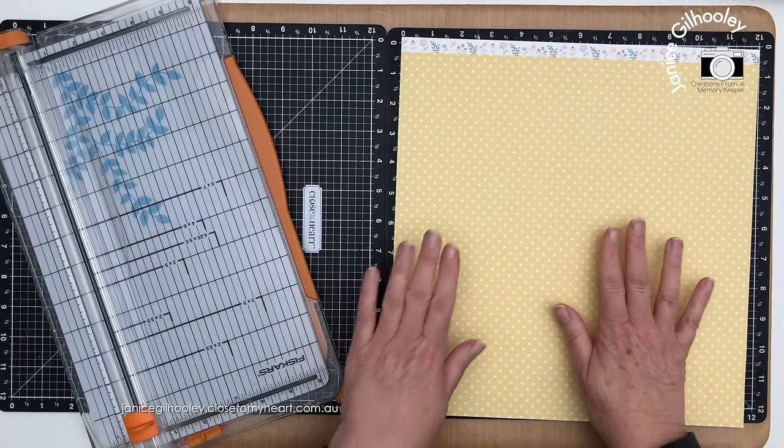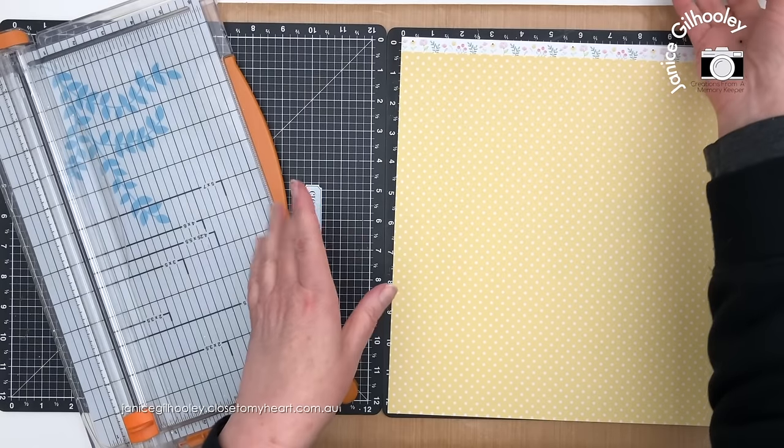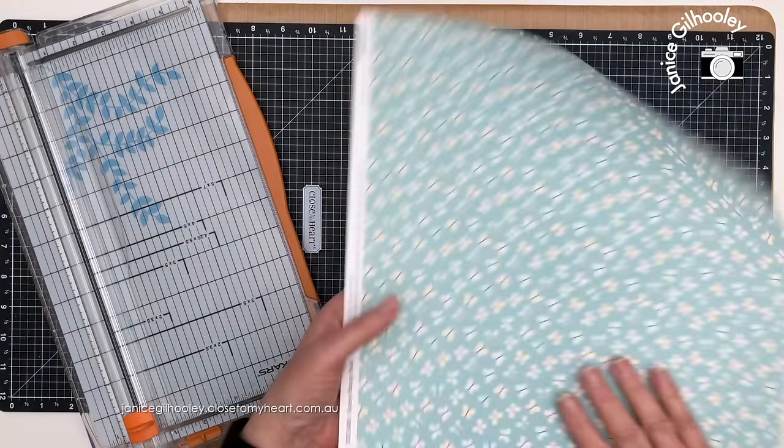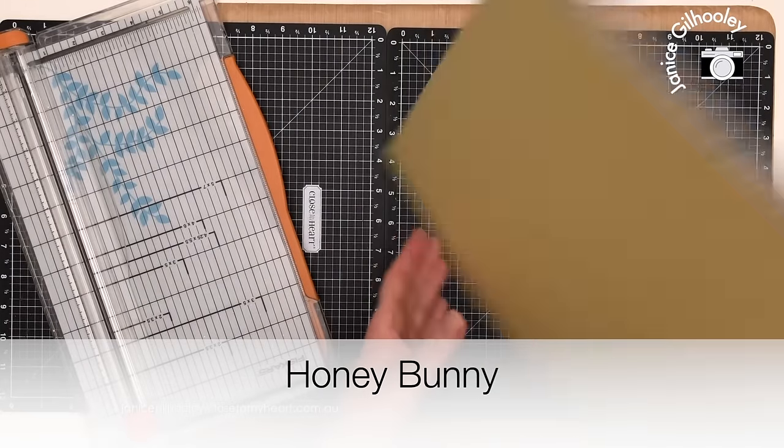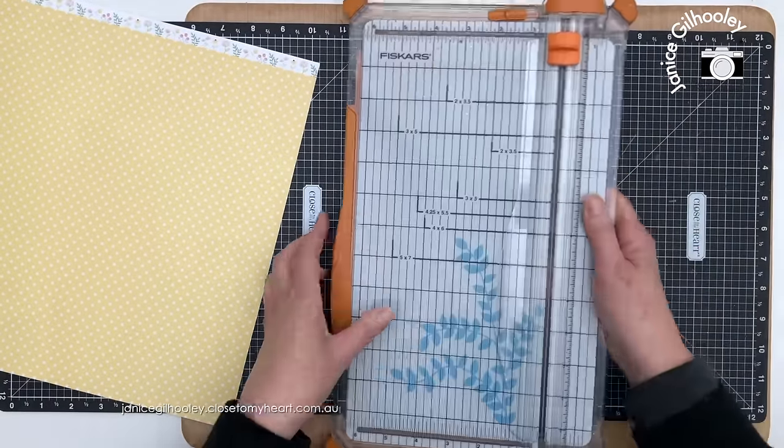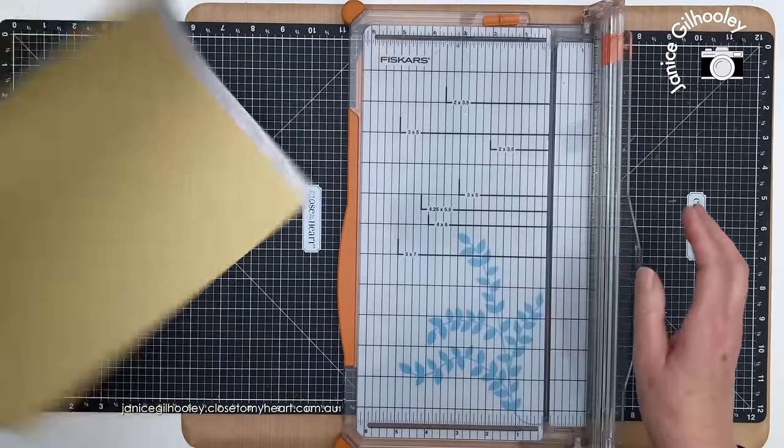Hello everyone and welcome to another scrapbook layout process. Today I'm going to be doing a 12 by 12 double page spread using the honey butter bulk paper. The layout is quite a simple design but I have a couple of tricks on how to put it together.